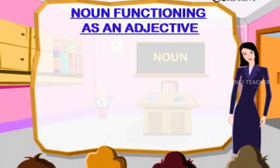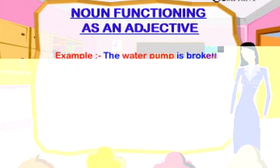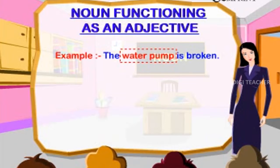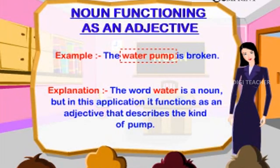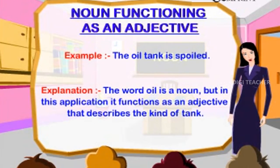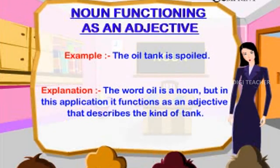Noun functioning as an adjective. Example: The water pump is broken. The word 'water' is a noun, but in this application it functions as an adjective that describes the kind of pump. Example: The oil tank is spoiled. The word 'oil' is a noun, but here it functions as an adjective describing the kind of tank.